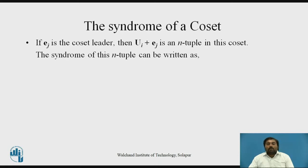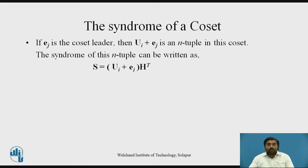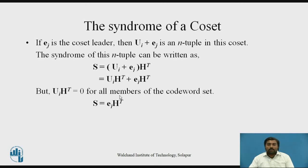Let us see what the syndrome of a coset is. We know a coset is a row of the standard array. If e_j is the coset leader, then u_i plus e_j is an n-tuple in that coset. The syndrome for this n-tuple is s equals (u_i + e_j) × H^T, where H^T is the transpose of the parity check matrix. Expanding: s equals u_i × H^T plus e_j × H^T. Since a valid codeword multiplied by H^T equals zero, the final equation becomes s equals e_j × H^T.